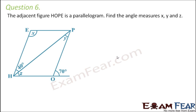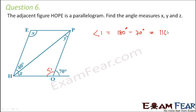Question number 6: the adjacent figure HOPE is a parallelogram. Find x, y and z. Here we will make use of the properties of parallelogram. We will try to find out angle 1. Angle 1 plus 70 degrees will be equal to 180 degrees, because this is a straight angle. Therefore, angle 1 equals 180 minus 70 degrees, which is 110 degrees.